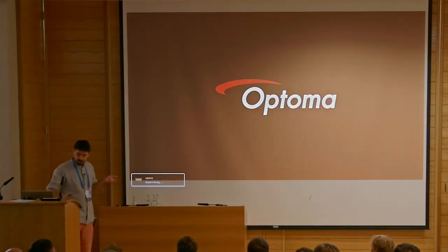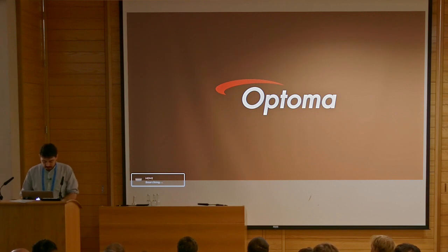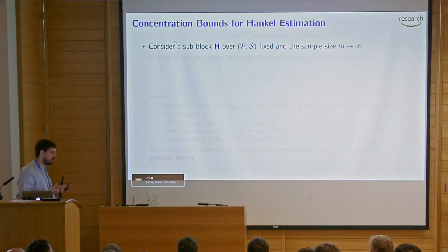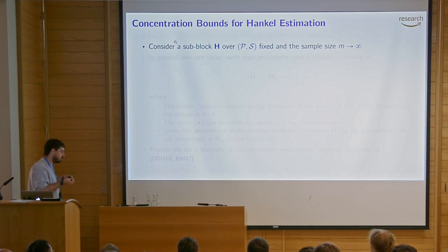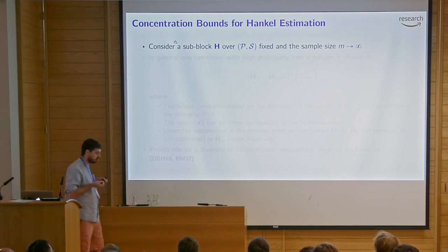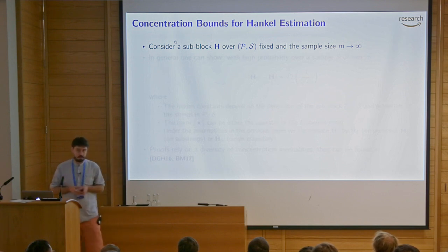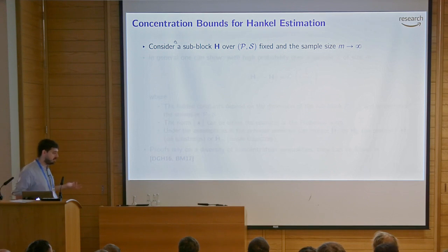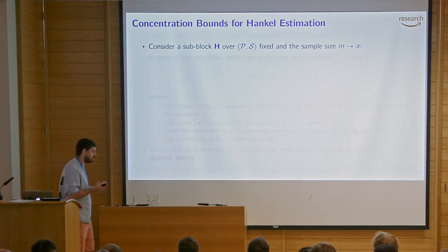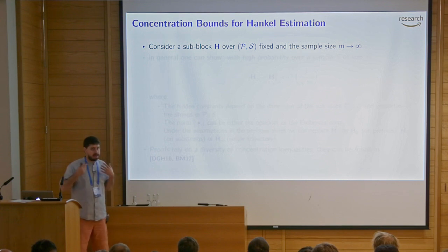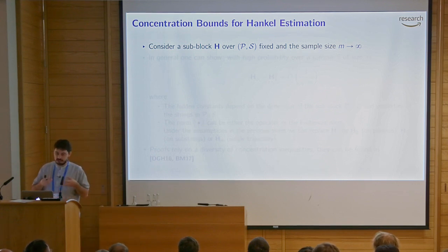The missing ingredient is how we can justify that these Hankel matrices we're estimating are not only consistent when we get infinite data, but we can also say something about the quality of this approximation when we have a finite amount of data. This connects to concentration inequalities and sample complexity bounds, like those in Ben and Barun's lecture.